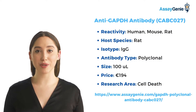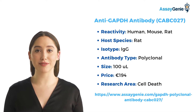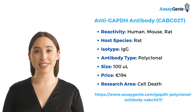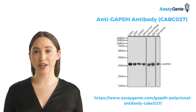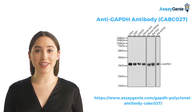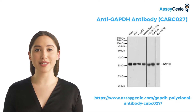At Assagenie, we provide a variety of GAPDH research tools to aid researchers. An example is our anti-GAPDH antibody. More details on this antibody can be found at the link below. Our antibody has been applied to western blot analysis of extracts of various cell lines at a 1 in 10,000 dilution. Here we can see the antibody at 37 kilodaltons.